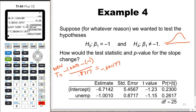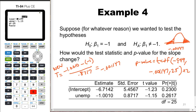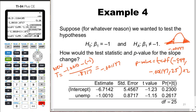The new test statistic is negative 0.001147 — essentially right at the center. Since the alternative is not equal to, we want both tails. The p-value is tcdf from negative 999 to negative 0.001147, and then 0.001147 to 999, with 25 degrees of freedom, times two. The result is a p-value of 0.999 — about as large as you'll ever see. We have absolutely no evidence that the slope is not negative one.